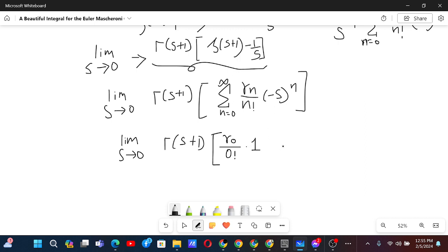So we have 1 plus sum from n equals to 1 to infinity, Stiltjes constant sub n by n factorial minus s to the power n. Now at this point in this, since n is going from 1, now when s is near to 0, it will be 0. Now we can evaluate the limit.